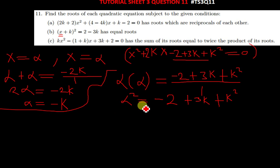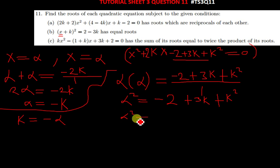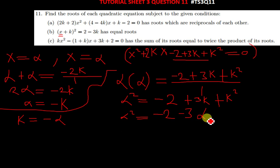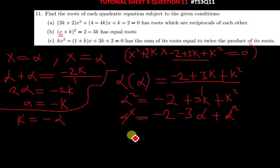Since we want alpha, let's make k the subject. We know alpha equals negative k, so k equals negative alpha. Substituting where there is k we put negative alpha: alpha squared equals negative 2 plus 3 times negative alpha plus negative alpha squared, which gives alpha squared equals negative 2 minus 3 alpha plus alpha squared. The alpha squared terms cancel on both sides.